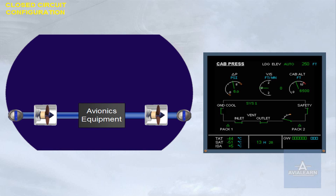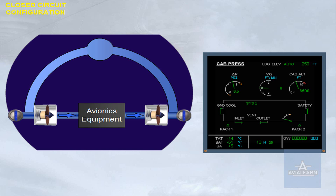When skin temperature is below a specified threshold, and in flight or on the ground with thrust levers at takeoff power, both inlet and extract valves close. The system uses air from the avionics compartment, and circulated air is also cooled by a skin heat exchanger. Both valves are closed — the system is in closed circuit configuration. This is the normal in-flight configuration.